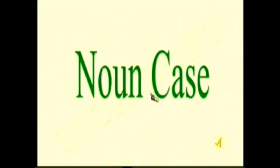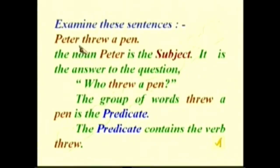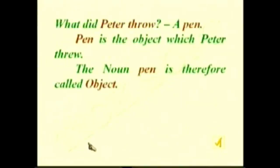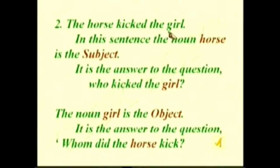Next topic: noun case. Examine the sentences. 'Peter threw a pen.' The noun Peter is the subject — it is the answer to the question 'Who threw a pen?' The group of words 'threw a pen' is the predicate, containing the verb 'threw.' Peter is called the subject and the remaining words are called the predicate. 'What did Peter throw? A pen.' So pen is the object which Peter threw.